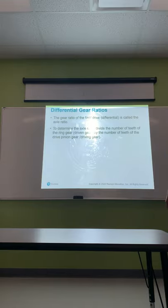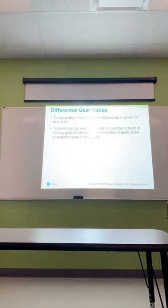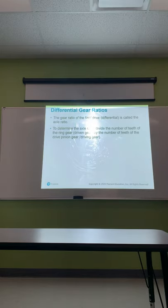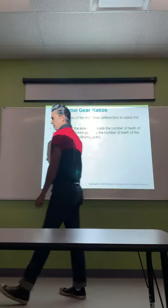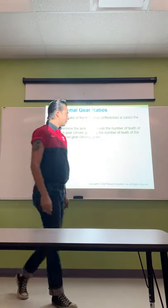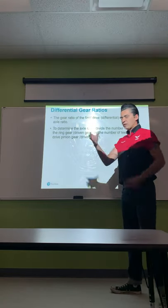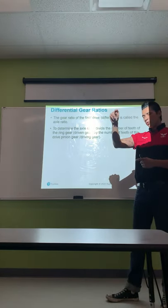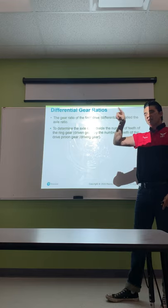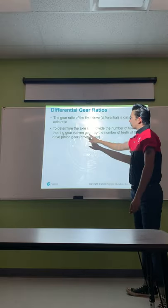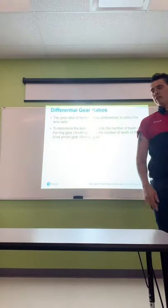The gear ratio of the final drive or differential is called the axle ratio. To determine the axle ratio, divide the number of teeth on the ring gear (the driven gear) by the number of teeth on the drive or pinion gear. In practice, you mark one of the teeth and count them — count the pinion gear first, then count the ring gear teeth, and divide ring gear by pinion gear to get your final drive ratio.